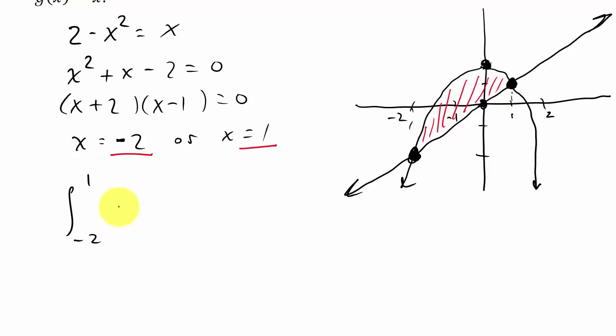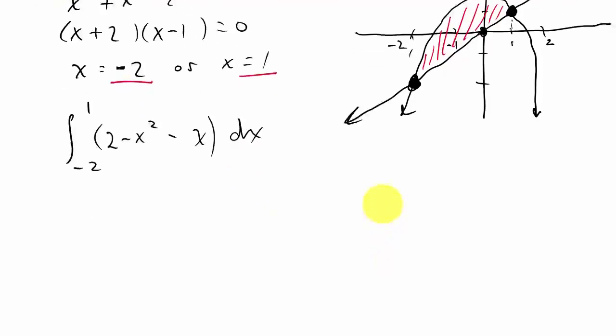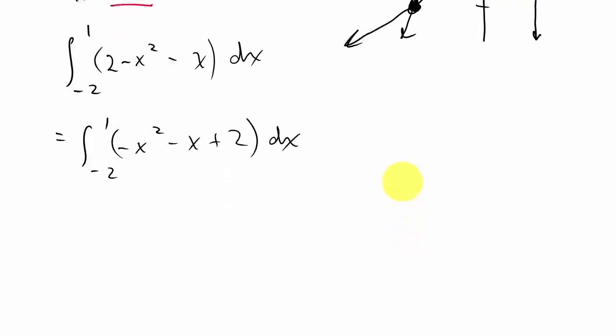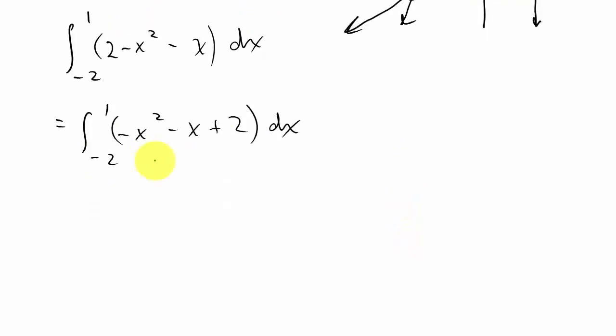And so that's going to be the function on top is 2 - x² minus the function on bottom which is g(x) = x. So that's x. And I'm going to integrate with respect to x. So before I do that I'm going to go ahead and rewrite this in descending powers. It's not something that you have to do but it's just nice to have it written like this.